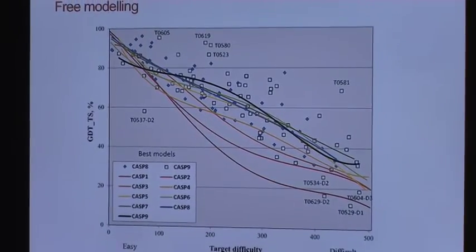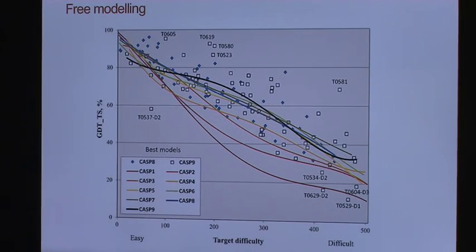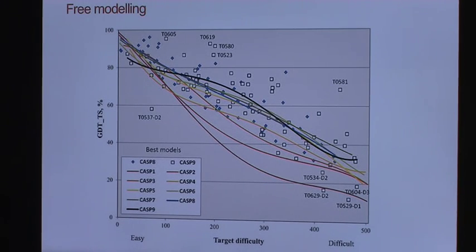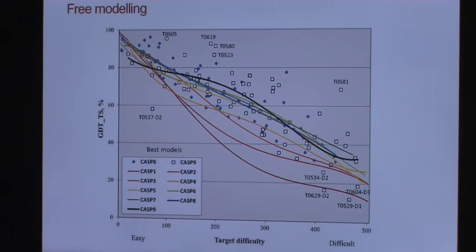This is very interesting. This is an image from a last review of the advances of this experiment. What you are seeing here is each point is the best research group that predicts the protein structure. Here you have a score of similarity between the model, the prediction, and the real structure. And this target difficulty is how similar is the query structure, the query sequence with known sequences.